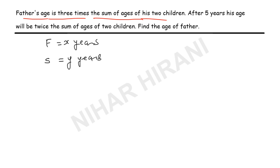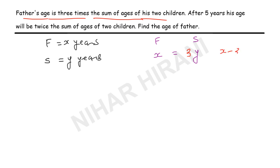Father is x and the sum of the children's ages is y. Father is three times the sum — if the sum is five, father will be fifteen. To form an equation, I put three with y, giving x = 3y. Simplifying further: x - 3y = 0. That is equation one.